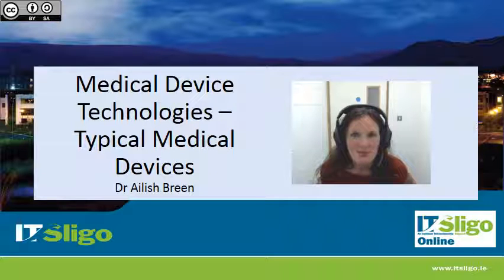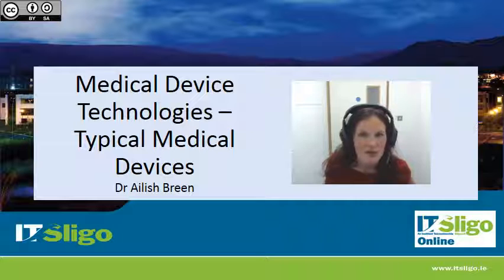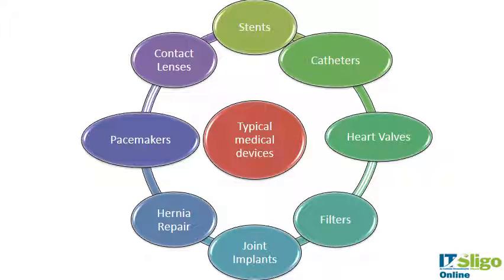To finish this MOOC on medical device manufacturing, I'm going to tie up a few loose ends by talking about two other typical medical devices. We'll look at their uses, component parts, and how they're manufactured. We've already discussed stents, joint implants, catheters, and hernia repair. I'm going to finish up by looking at pacemakers and heart valves. This diagram gives a flavor of the different types of medical devices discussed in the course.